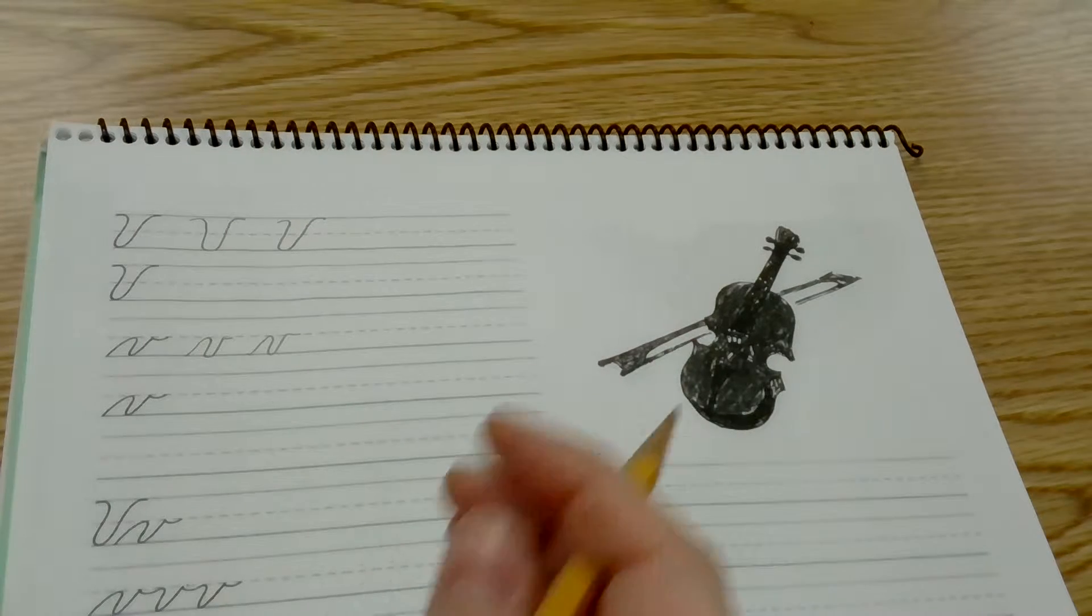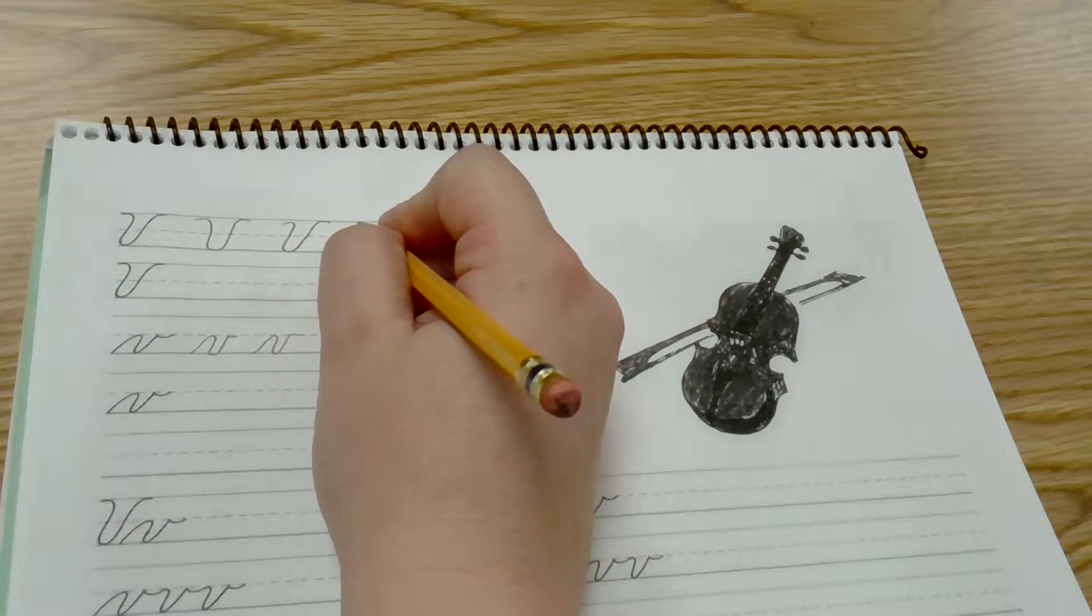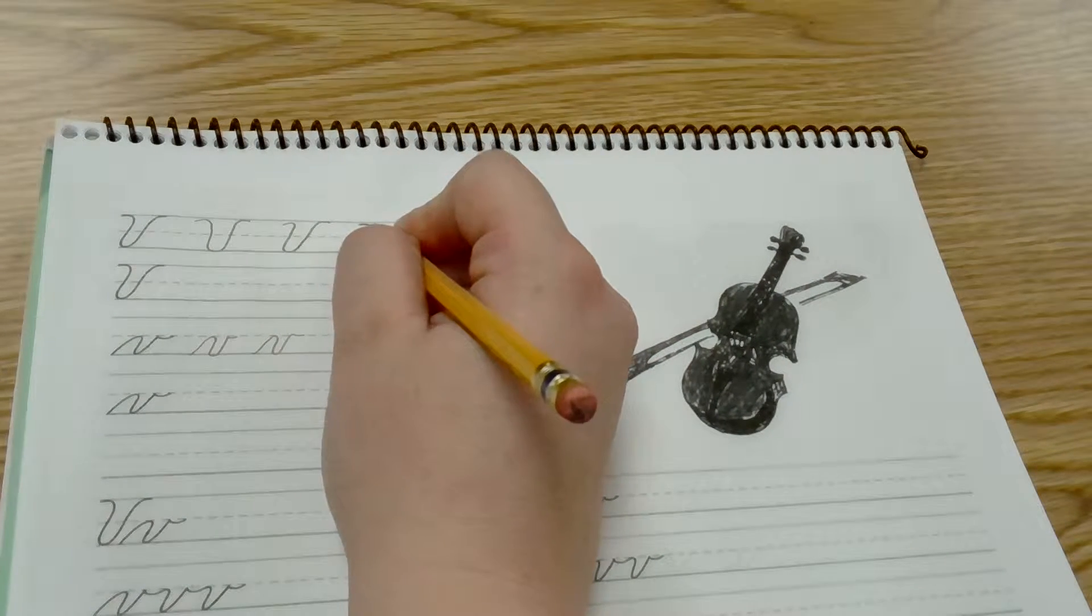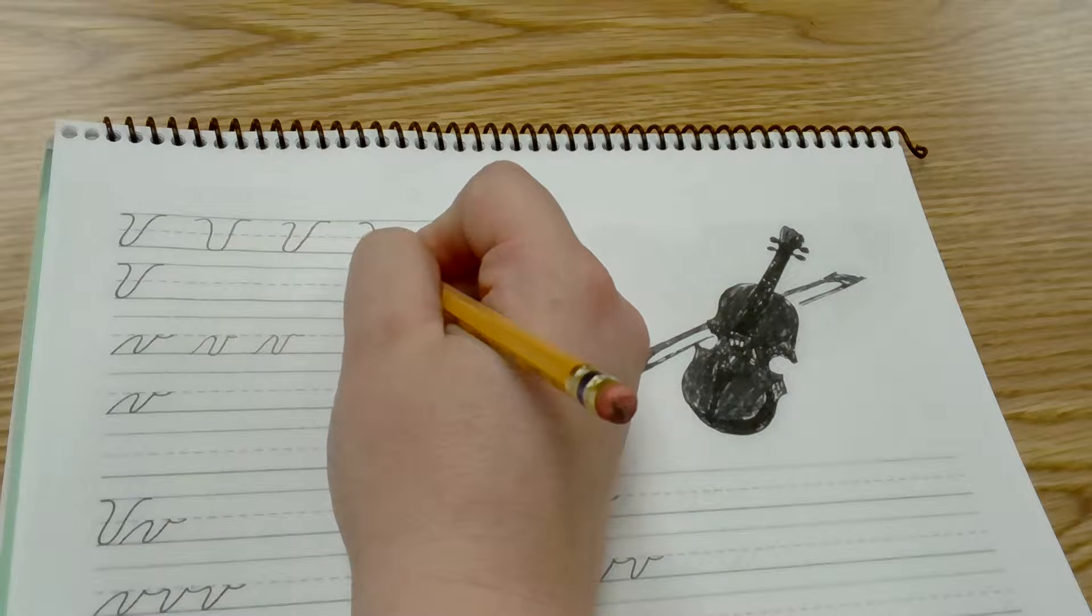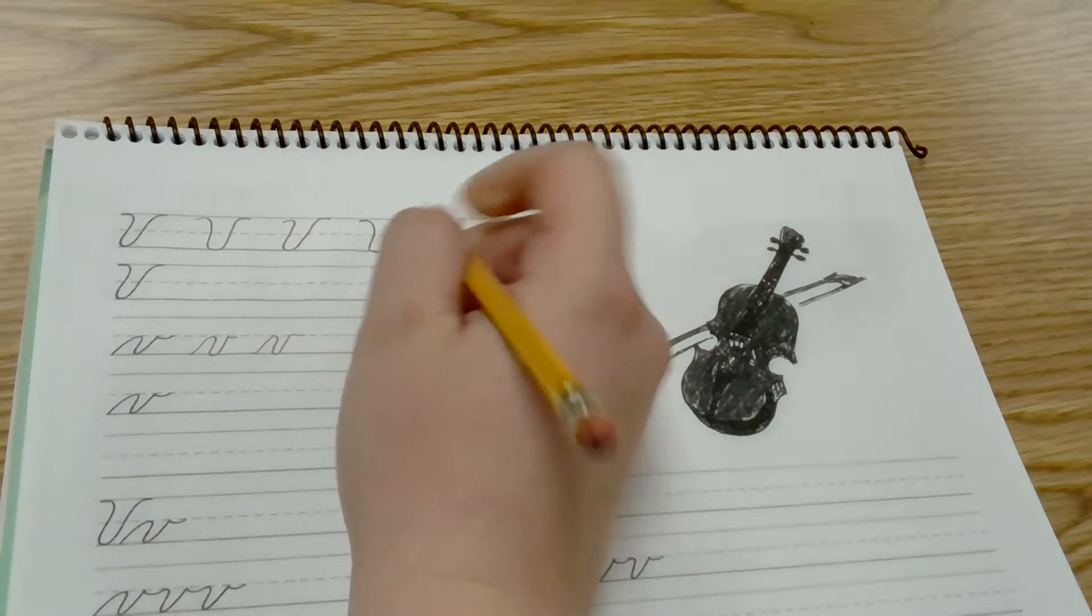Today we're going to be practicing our cursive V. In capital form, you start at the top line, loop over, slant down across the baseline, back up, and loop out.